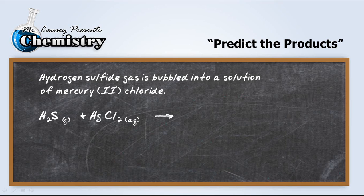Now mercury 2 means that it has a plus 2 charge. So don't get it mixed up with the mercury 1 just because mercury 1 has a 2 on it.